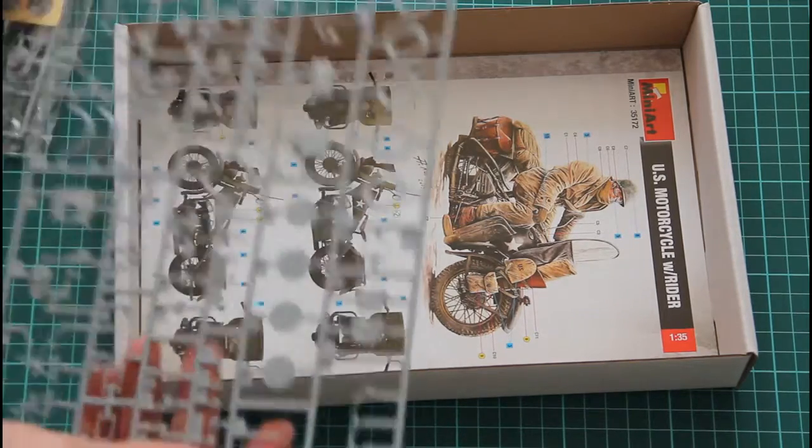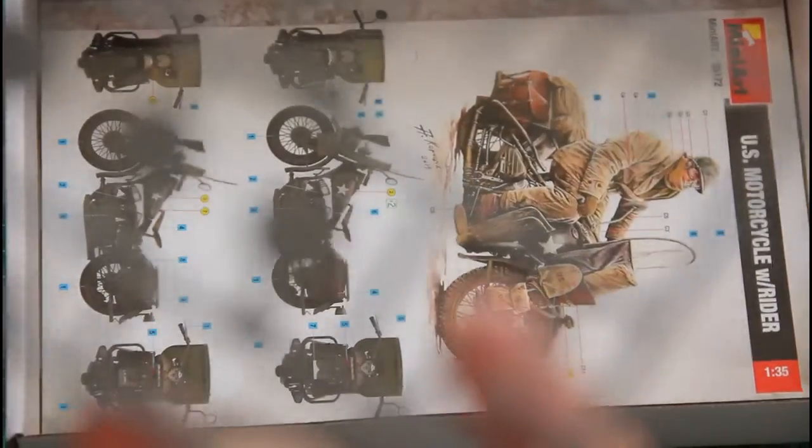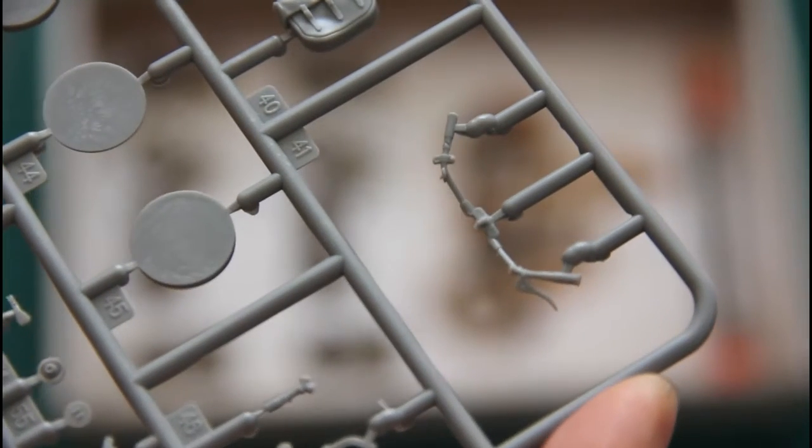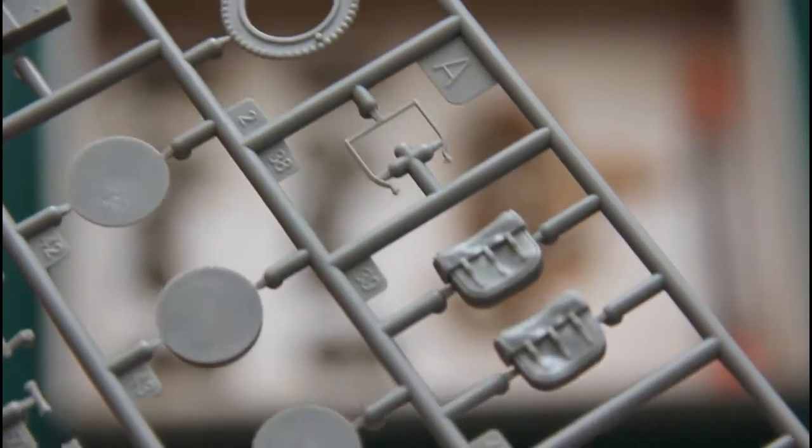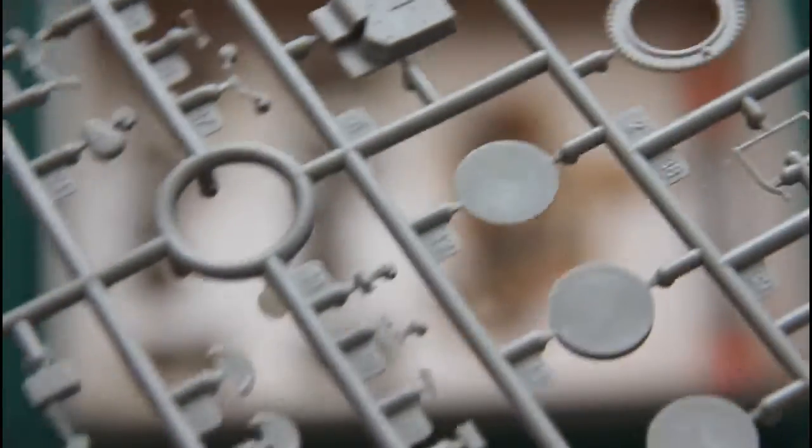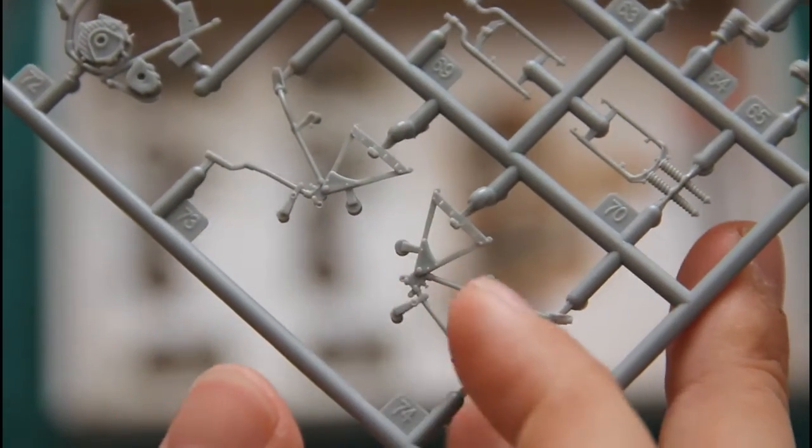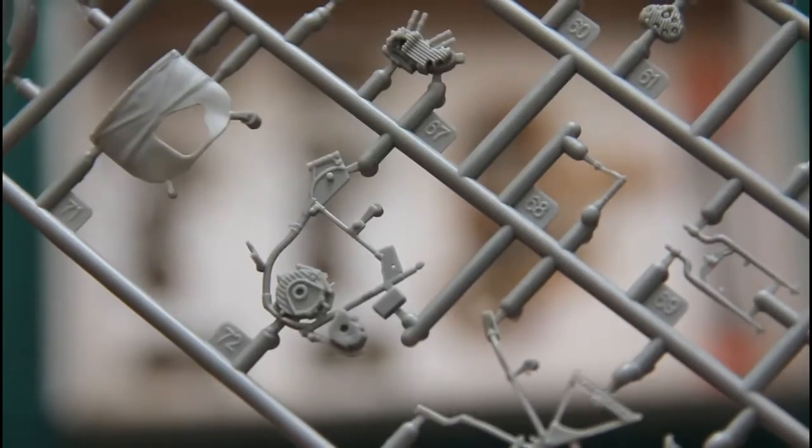Now we can check the first sprue which contains all necessary parts for the motorbike. Here you can see, for example, the steering handle, side backpacks, and other mechanical parts. As you can see, we don't have a one-piece frame. We have a close resemblance of the frame, but all other parts will have to be assembled separately.